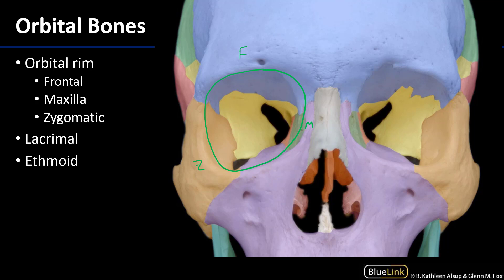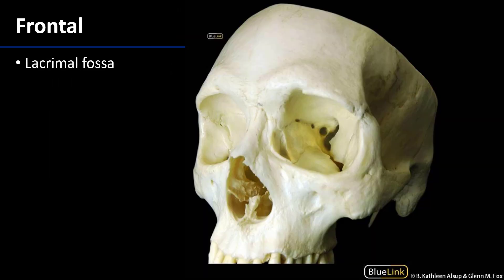As we go deeper into the orbit, we see that there are other bones which comprise this — namely the lacrimal. It's probably not best seen in this particular view, but also the ethmoid and the sphenoid. We also know that there is a very tiny part of the palatine bone as well. So let's take a look at these bones in a non-color-coded skull.